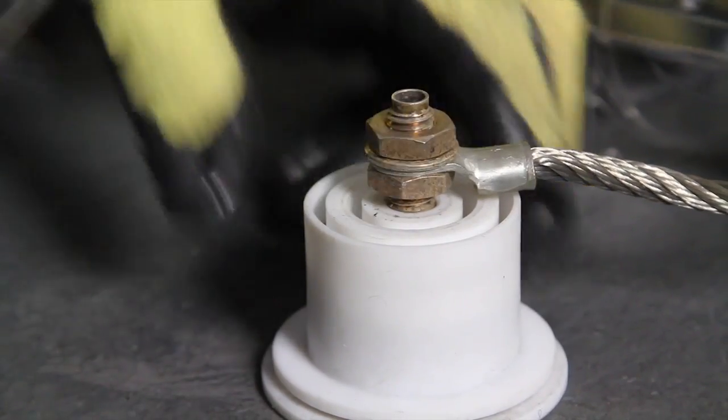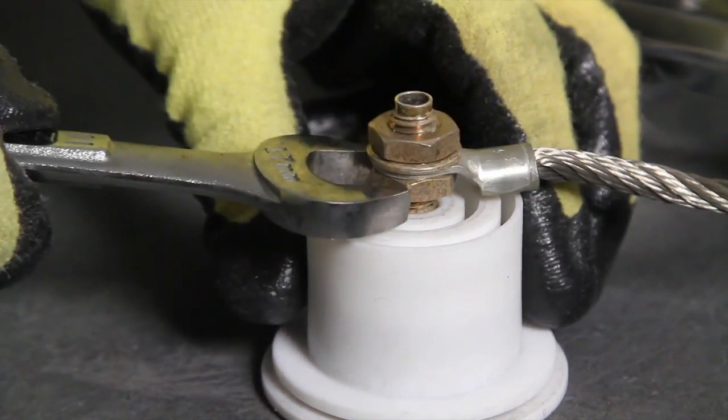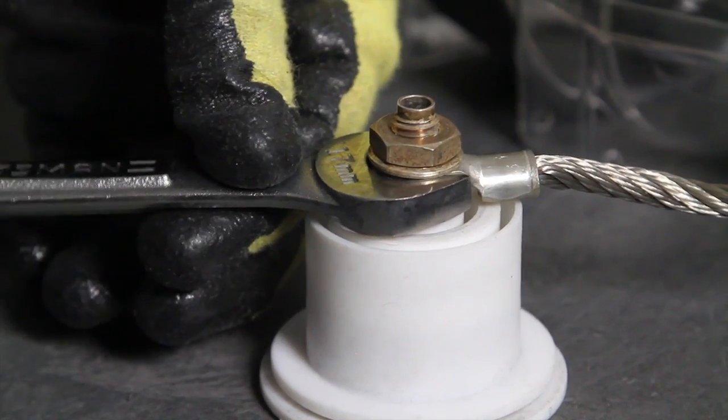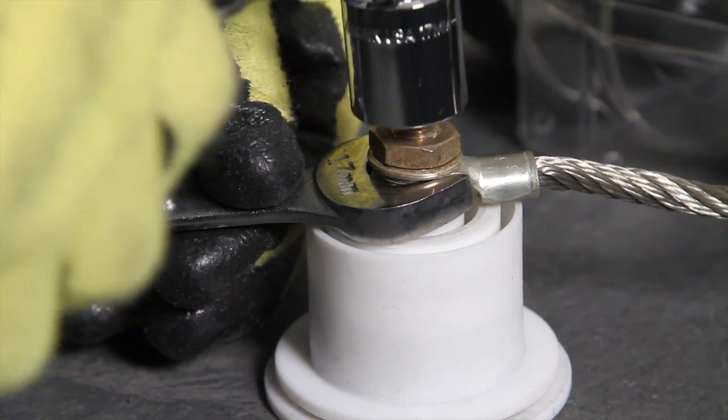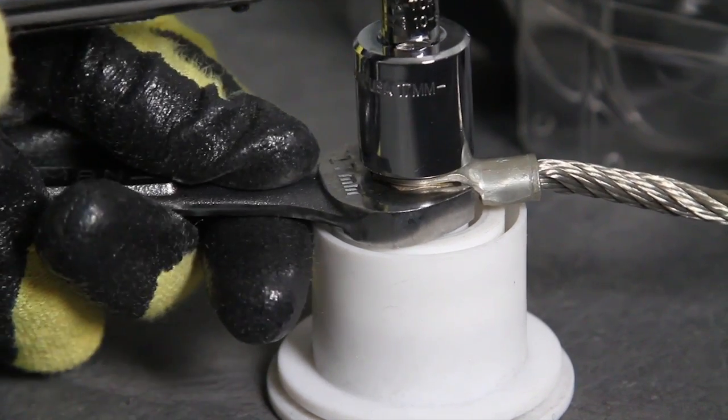Next, reattach the insulator to the anode cable using the 17mm socket and a 17mm wrench. Torque this to 80 inch-pounds.